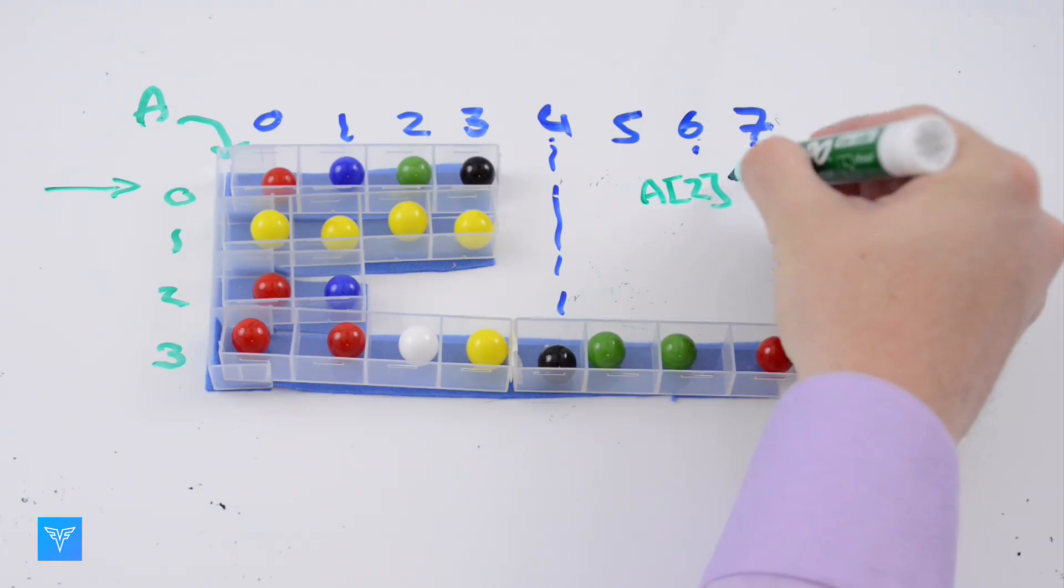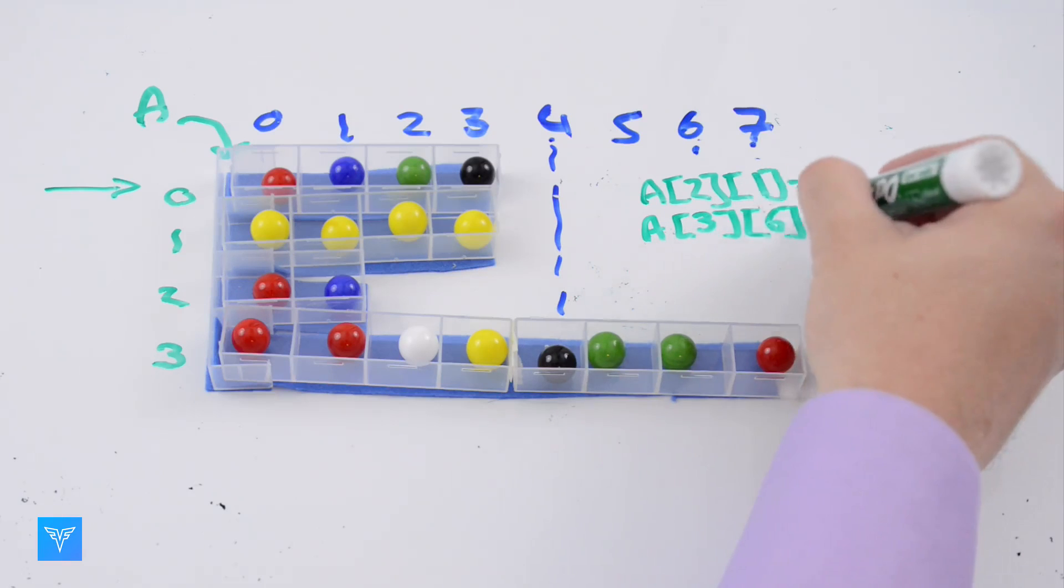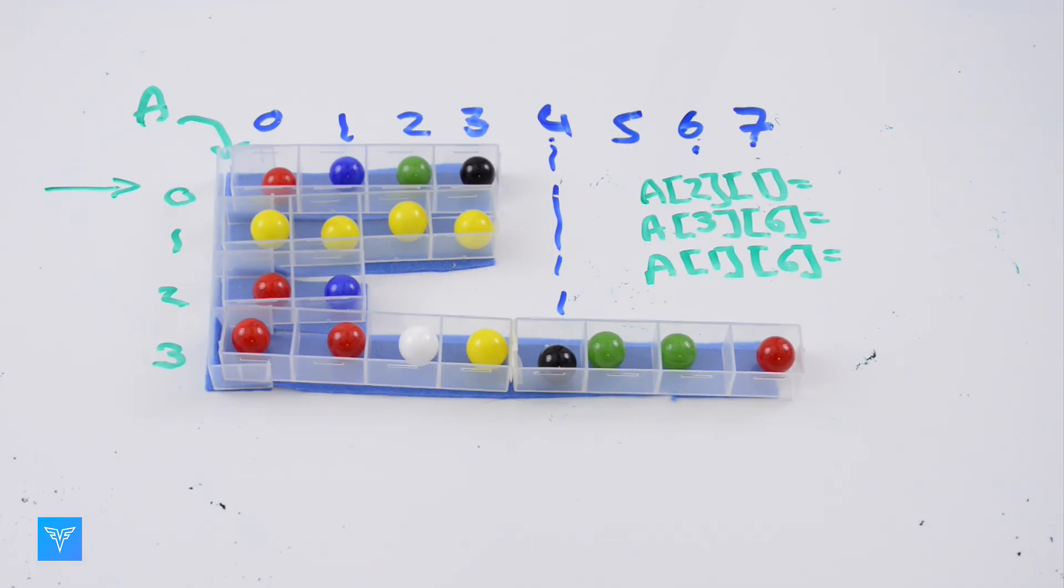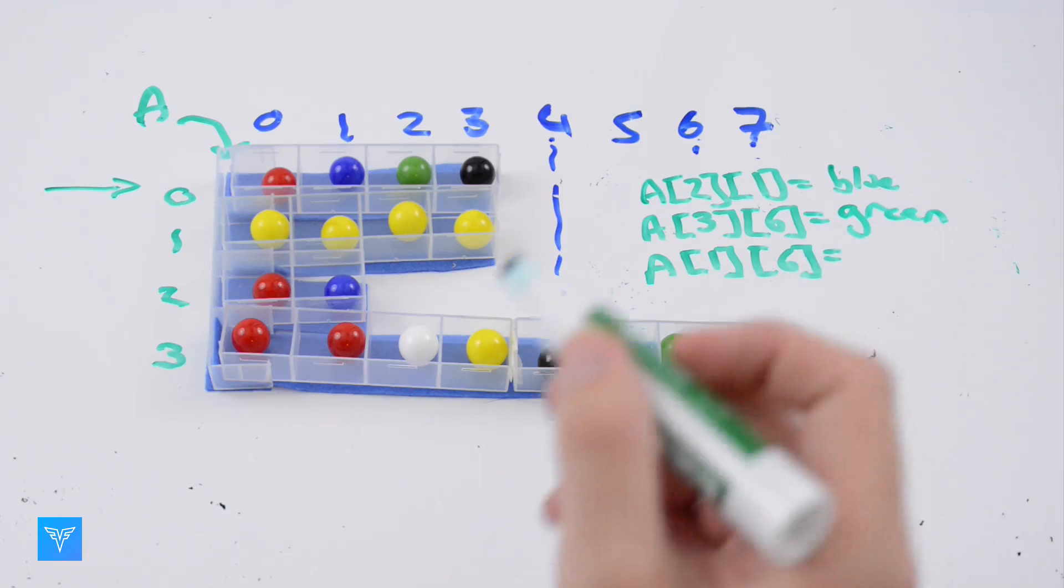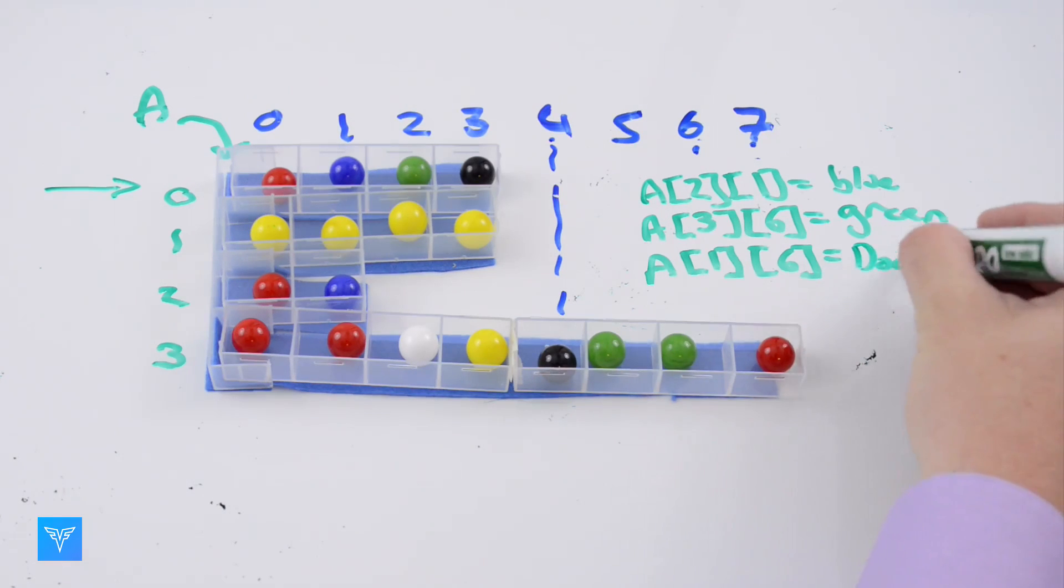What color are the marbles located at A21, A36, and A16? The marble in A3 at index 1 is blue. The marble in A2 at index 6 is green. The array A1 only has indices 0, 1, 2, 3, so there is no A16.